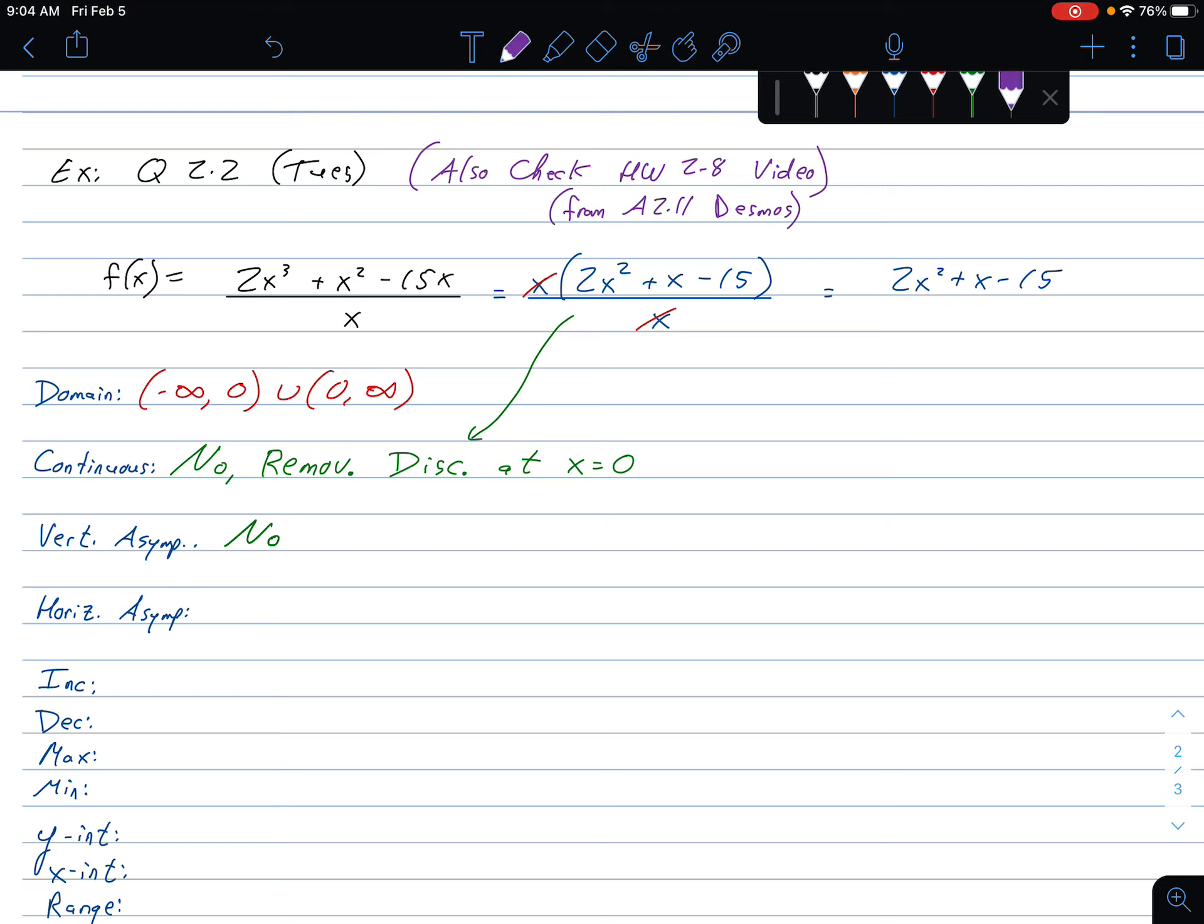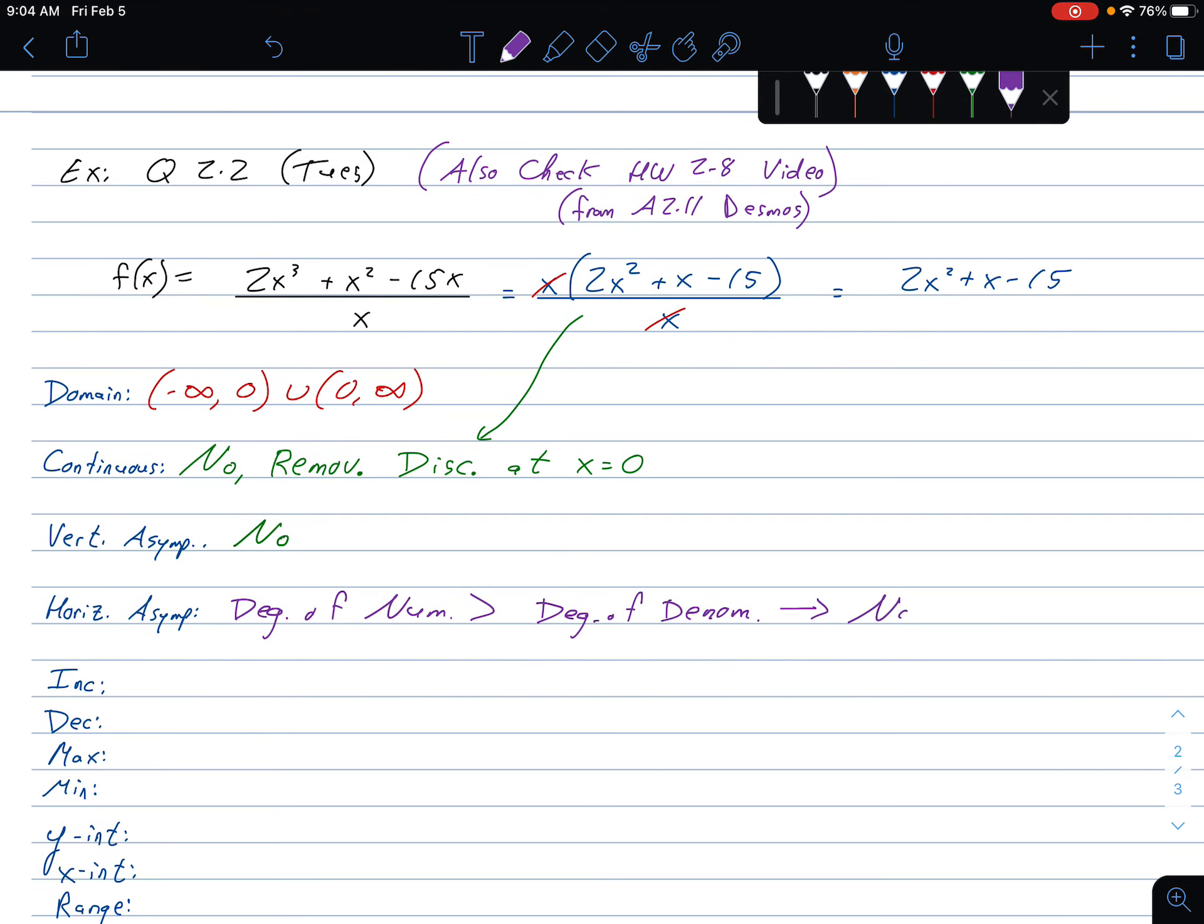But we go down to horizontal. Our rules for horizontal say, the degree of the numerator, how it compares to the degree of the denominator. So, looking over here. What's the degree of the top originally? A 3. What's the degree of the bottom originally? A 1. Degree of 3 on top, degree of 1 on bottom. I'm greater on top than I am on bottom, which means there is no horizontal asymptote.